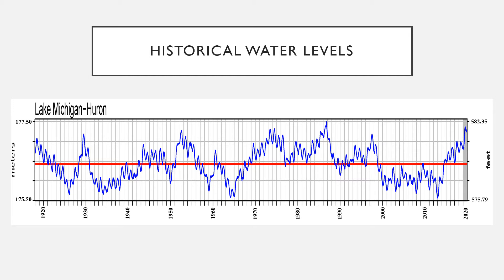Now I'm going to go through the historical water levels on Lake Michigan and Huron. The red line is the average water level for the past hundred years, and the blue lines show what has actually happened in those years. You can see that from highs to lows it fluctuates approximately two meters in water levels, and when you look at the trend it goes from extreme highs to extreme lows in about a 20 to 30 year period.